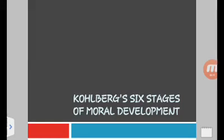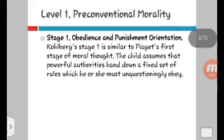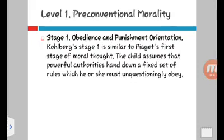He divided his stages of moral development into six stages, but it's divided on three levels. The first one: pre-conventional. The second one: conventional. And the last: post-conventional level of morality.